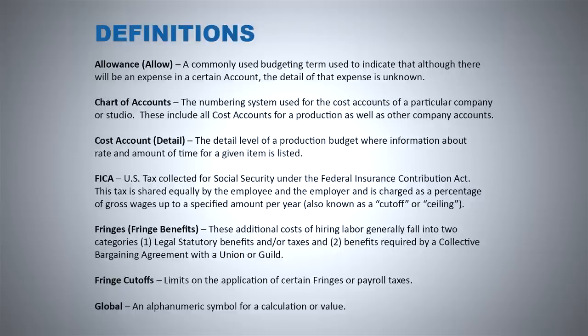Cost account, or the detail level: this is the detail level of a production budget where information about rate and amount of time for a given item is listed. The cost account tends to be one of the only places in the budget where we're actually adding money — saying this person is going to work this many hours at this hourly rate, resulting in this amount of cost. It's the base level of our budget.